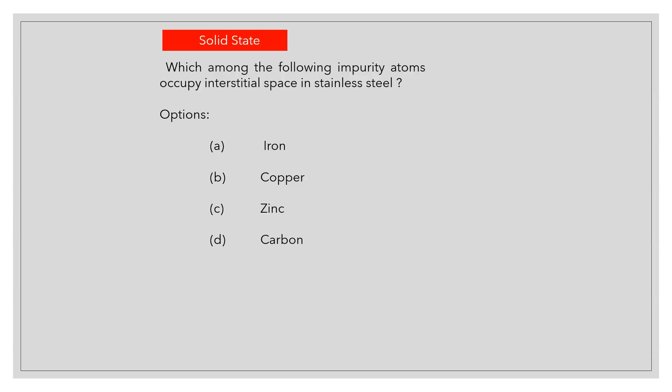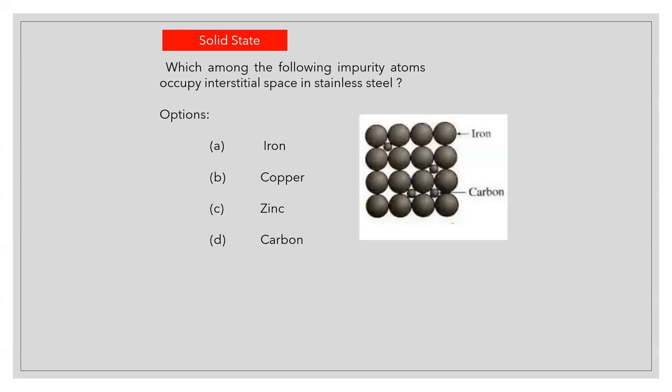Which among the following impurity atoms occupy interstitial space in stainless steel? Correct answer: D, Carbon.